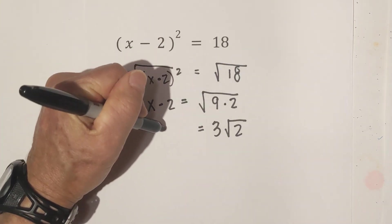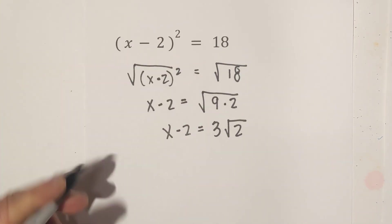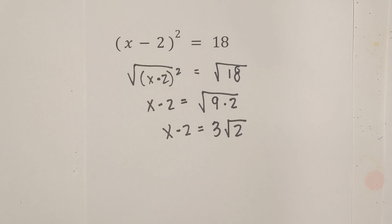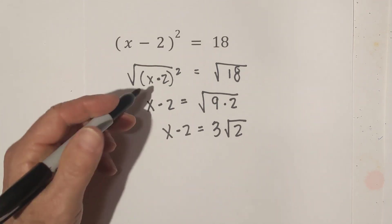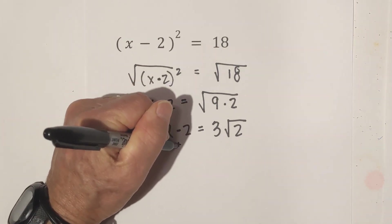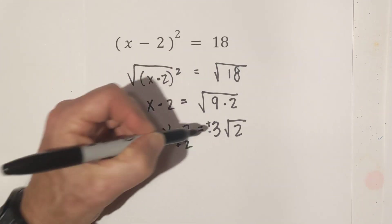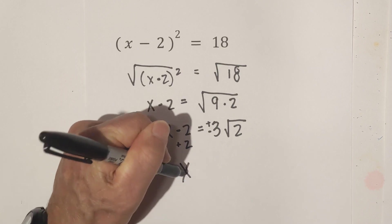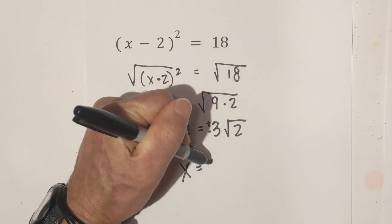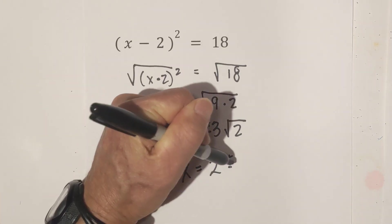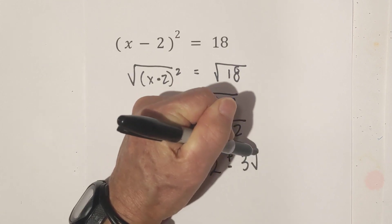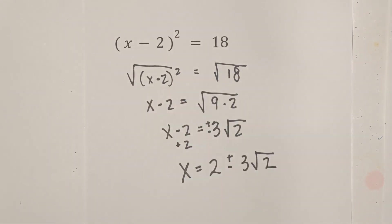So now we have x minus 2. So now what I need to do is get x by itself. So I'm going to add 2. And once again, this is a plus or minus. So it will become x equals 2 plus or minus 3 square root 2. So there's your solution.